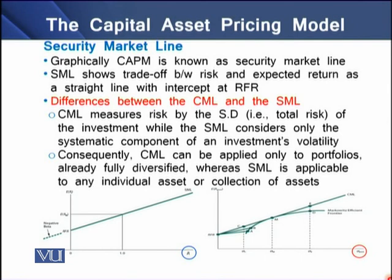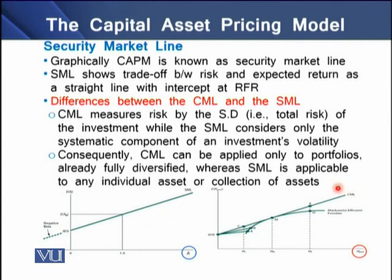The graphical representation of CAPM is generally known as the Security Market Line, which we can see on the left bottom of the screen. The SML shows the trade-off between the risk of an individual security and the expected return as a straight line with the intercept at the risk-free rate. We can compare the SML graph with the CML graph here.